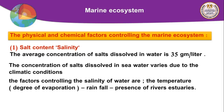Not all seas have the same salt concentration. The average salinity is about 35 grams per litre. Salt concentration can increase to 40 grams per litre in seas like the Red Sea and the Arabian Gulf, while it can decrease to 20 grams per litre in seas like the North Sea and the Baltic Sea.